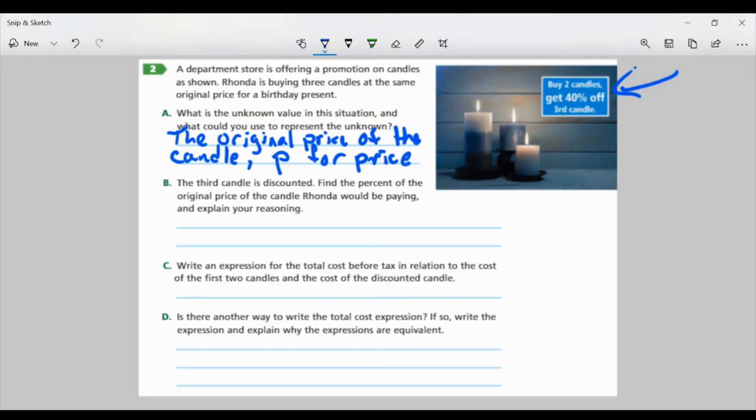Part B, the third candle is discounted. Find the percent of the original price of the candle Rhonda would be paying and explain your reasoning. Well, I know the original prices for the other two candles that she's going to buy, the first two is 100%. The third one will be 40% off. So I want to take 100% and I want to subtract 40% from it. Which is 60%. That's how much percent of the original price Rhonda is going to pay for that third candle.